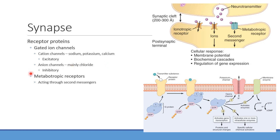We also have metabotropic receptors — like G protein-coupled receptors and tyrosine kinase receptors — which work through second messenger systems such as cyclic AMP, cyclic GMP, and IP3, as covered in pharmacology.